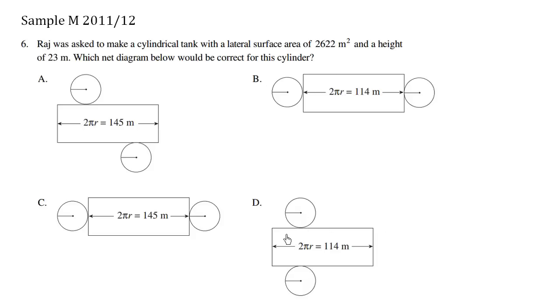So we have a lateral surface area, which is the side of the cylinder. This is a rectangle. The area here of this rectangle is equal to 2,622 meters squared.